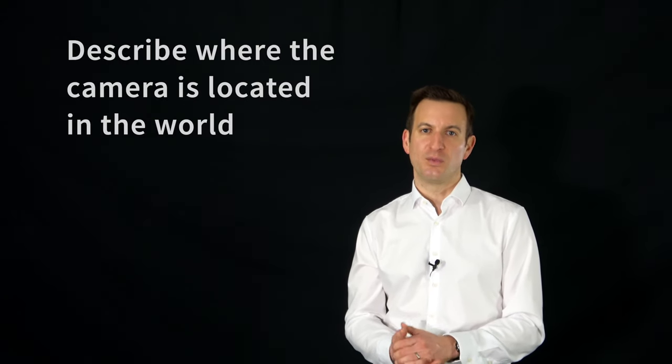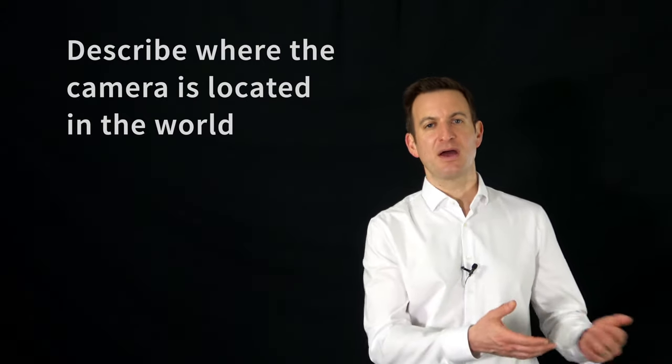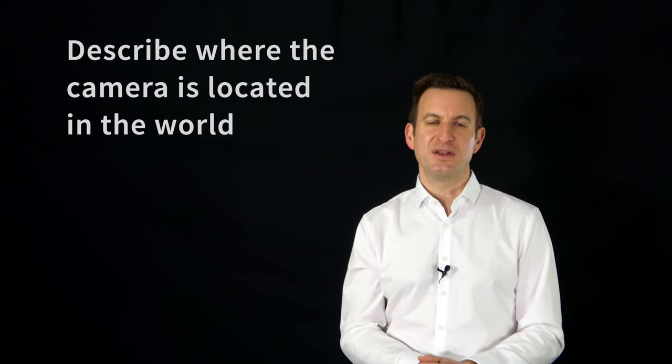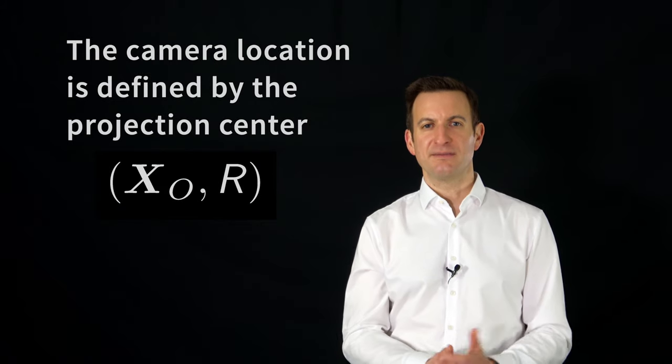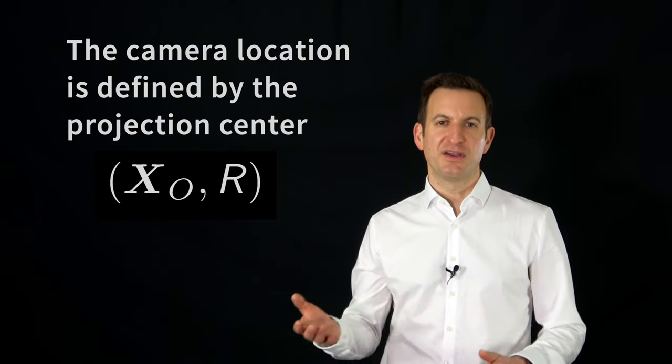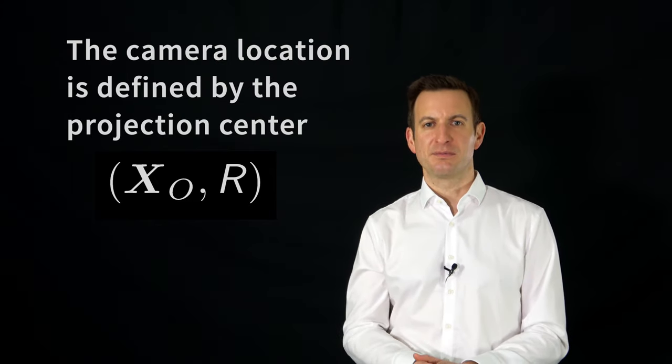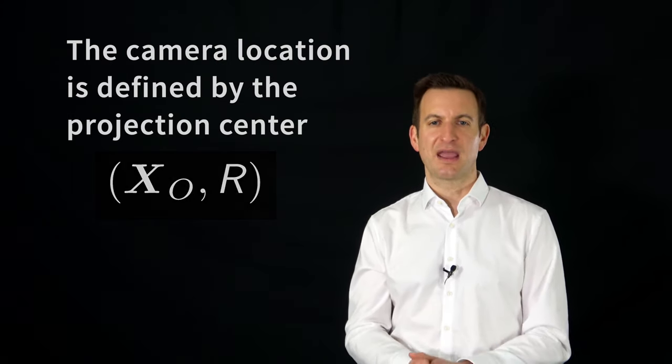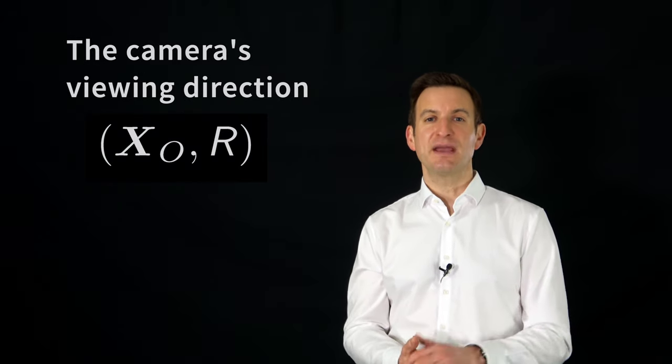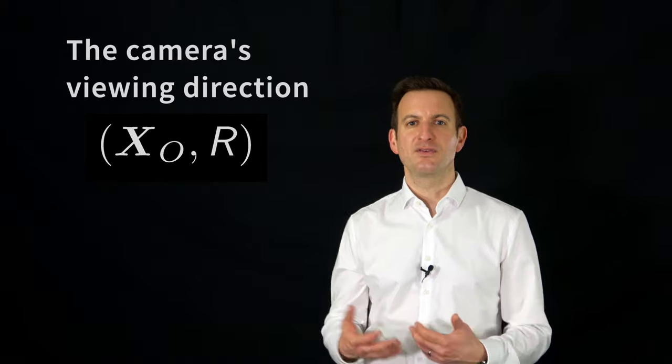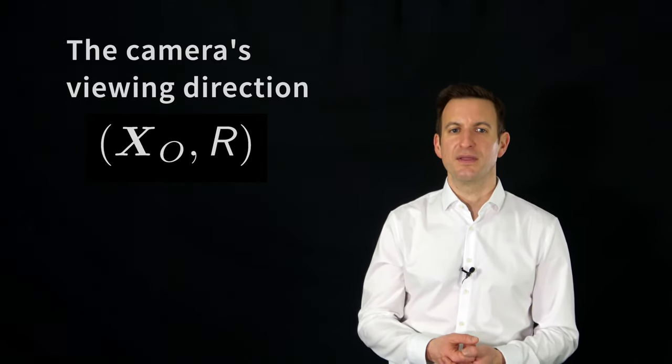So the first thing we need to do is we need to describe where is our camera. So we need to describe the location of the camera in this world coordinate system. And for that we need to describe where is the projection center, expressed with a variable called x0, which is an X, Y, and Z location of the projection center of our camera. And then a rotation matrix comes with it, or three rotation parameters, yaw, pitch, roll for example, to describe where the camera is actually looking to in this 3D world.